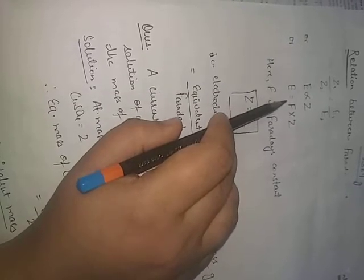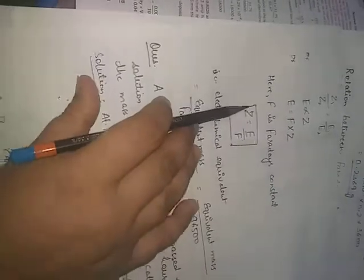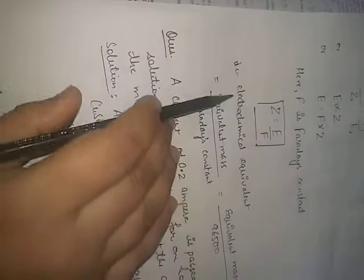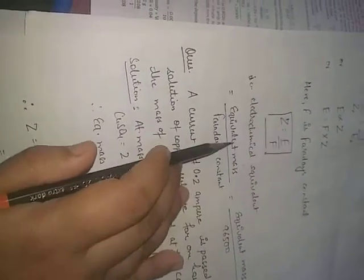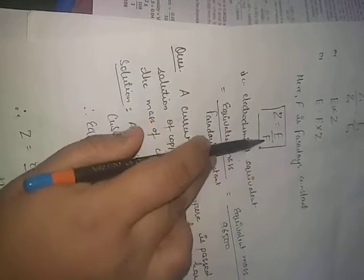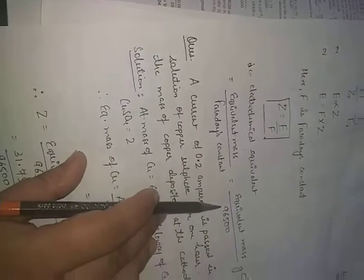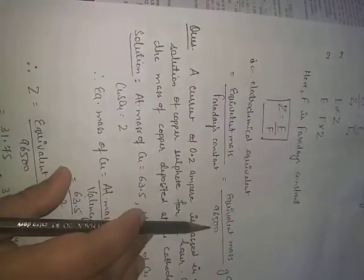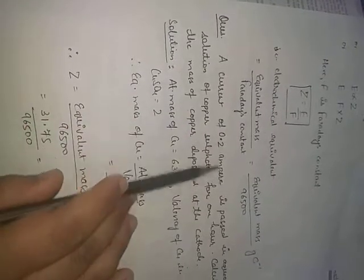This gives us E = F×Z, where F is Faraday's constant. We can also write Z = E/F, meaning electrochemical equivalent equals equivalent mass divided by Faraday's constant (96500). So Z = equivalent mass / 96500.